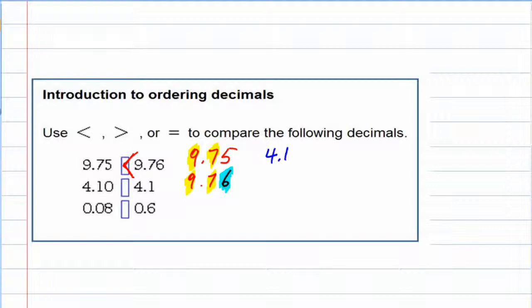4.10, 4.1. Now here, same value for the first place value. Same value for the second place value. When I'm doing that last digit, there's nothing on that bottom number out there.